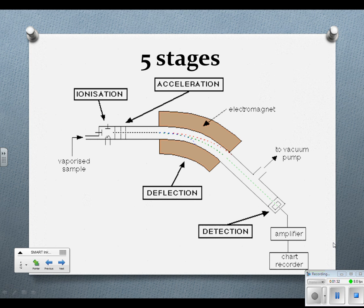So there's five stages. The first one is not in this picture. Well, it kind of is. This vaporized sample. So vaporization is the first. Then it goes through ionization, acceleration, deflection, and detection.